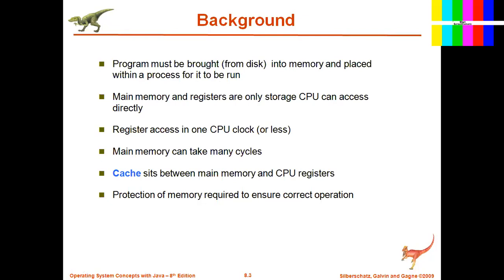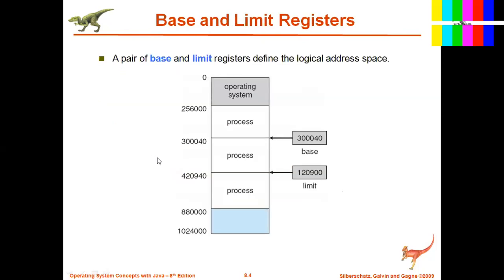Memory access can take many cycles. The CPU takes one cycle to access data stored in registers, one or two cycles to access data stored in cache memory, and more than two cycles to access data in main memory. That is the introduction for this topic. Each process will be having its own memory space.